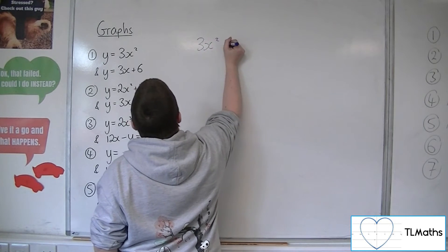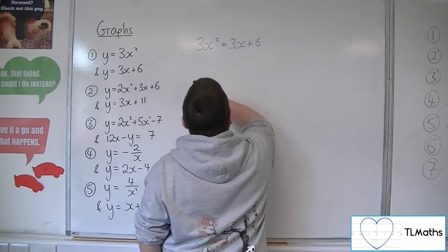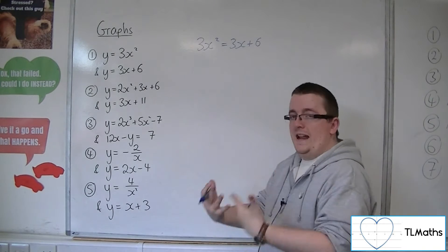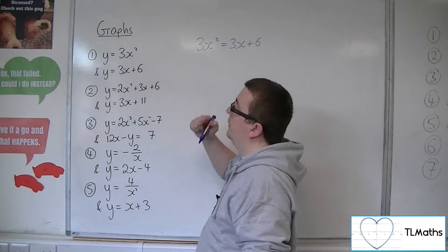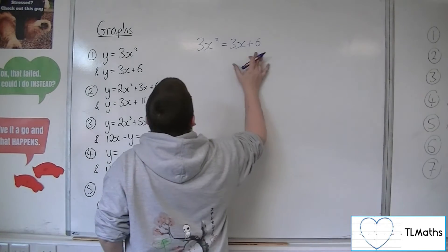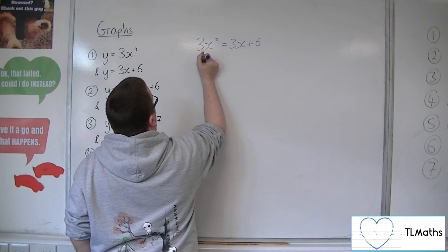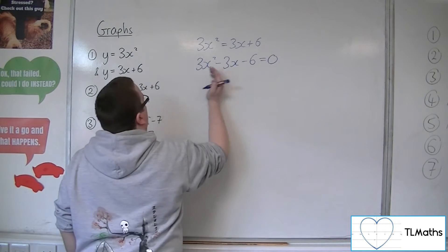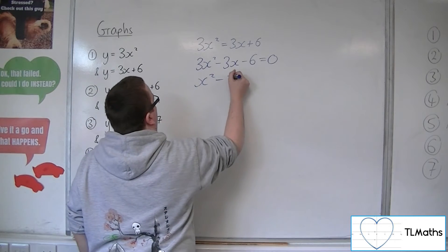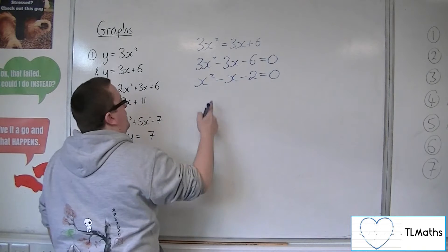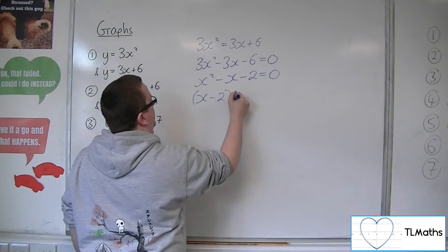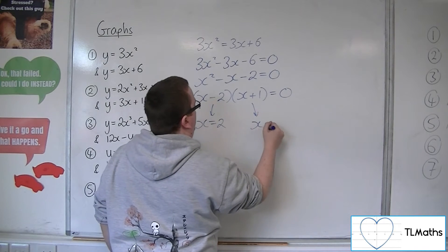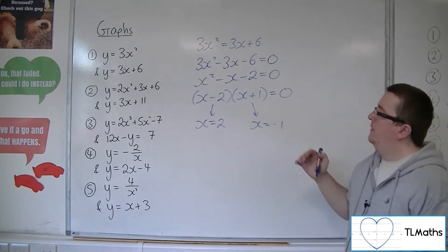So 3x squared equals 3x plus 6. If I solve this equation, this will tell me the values of x that represent the x-coordinates of where this curve and this line intersect. I'm going to move everything onto one side: 3x squared minus 3x minus 6 equals 0, then divide through by 3. This is a quadratic that factorises to (x minus 2)(x plus 1).